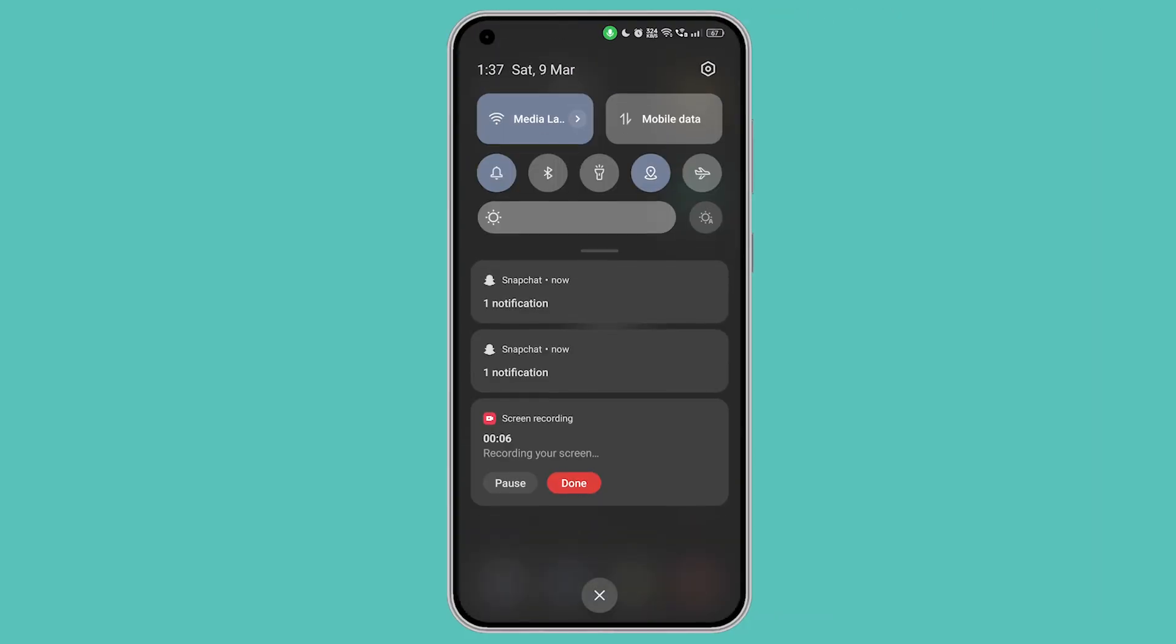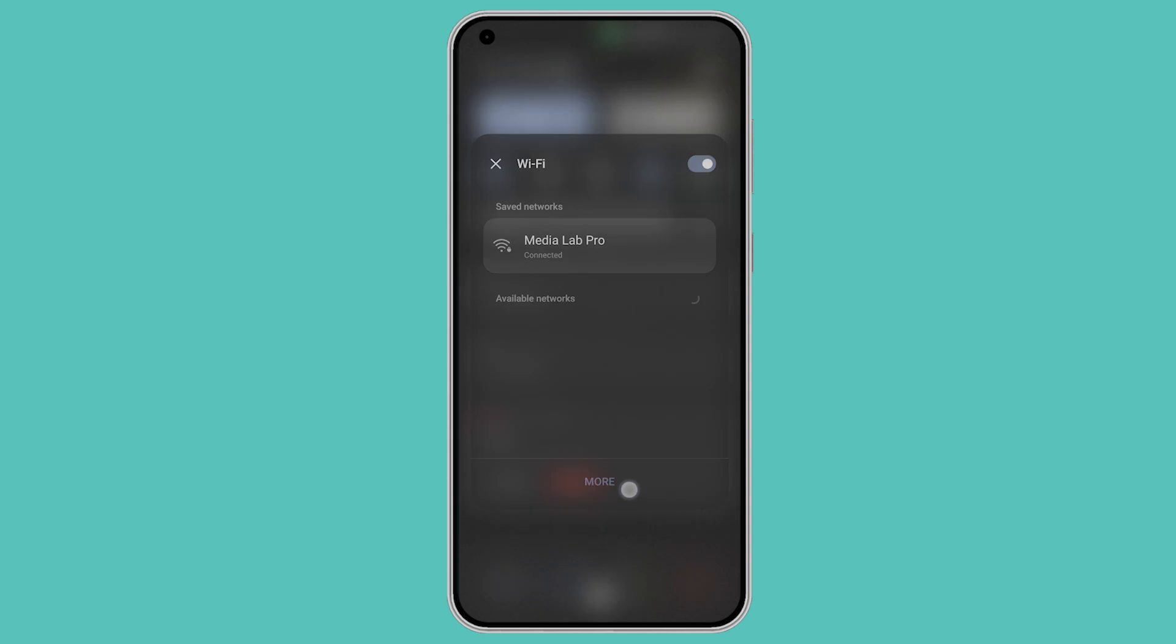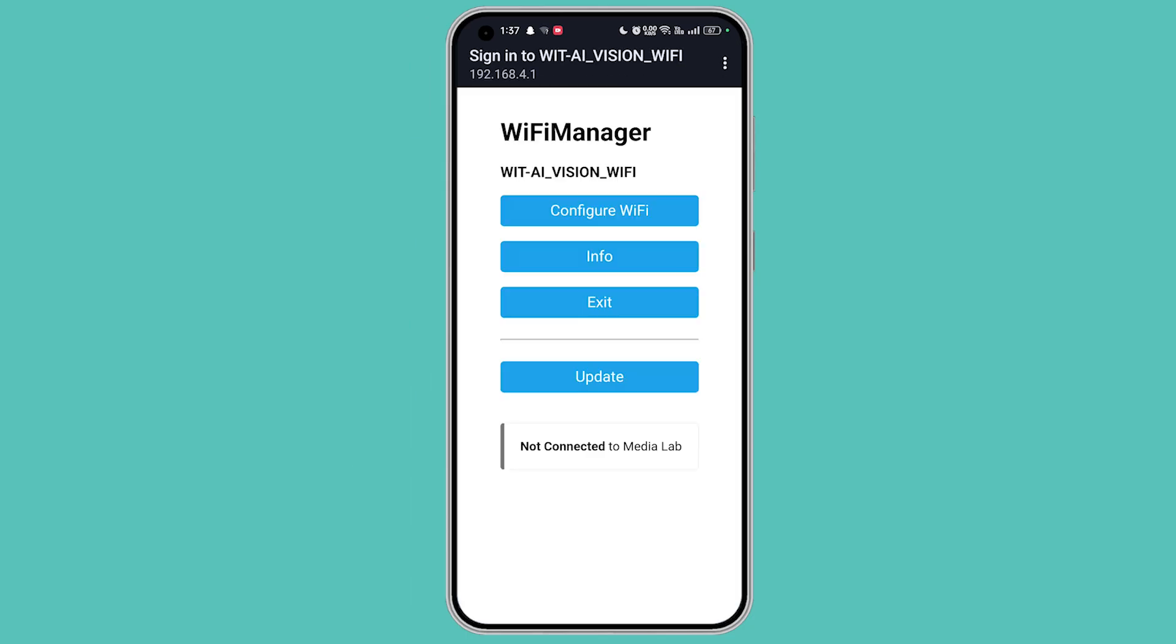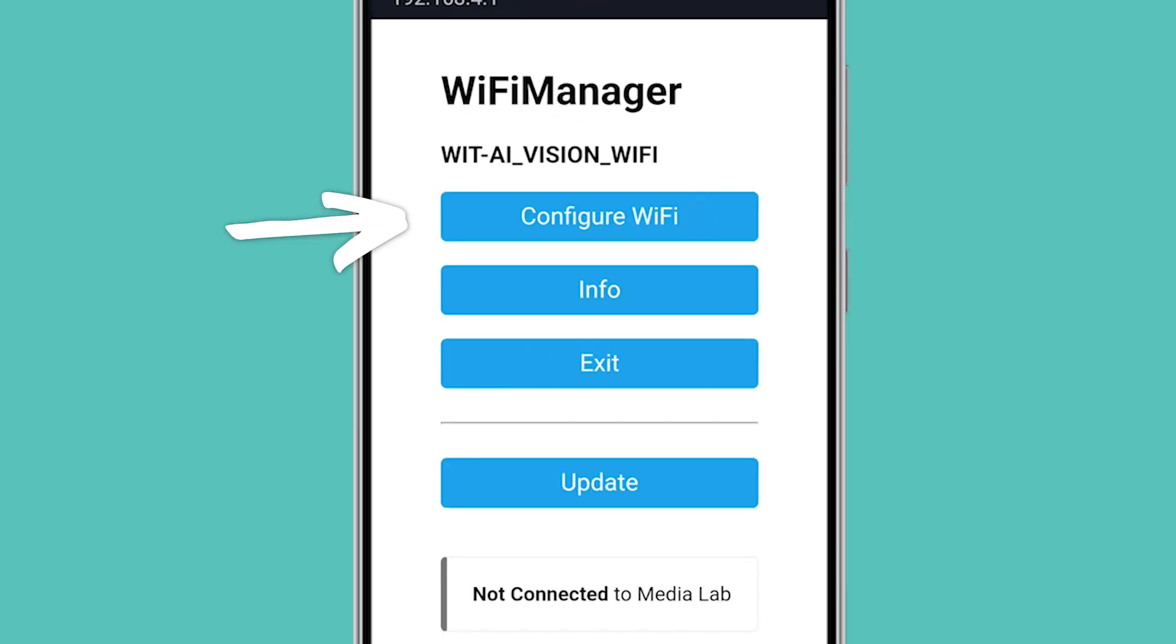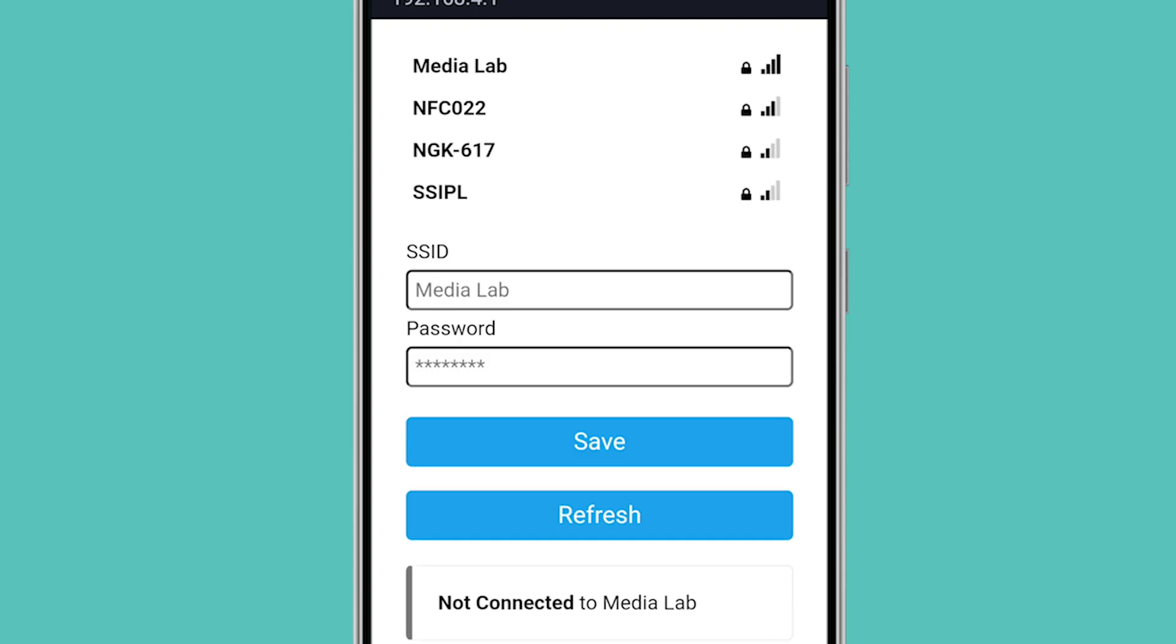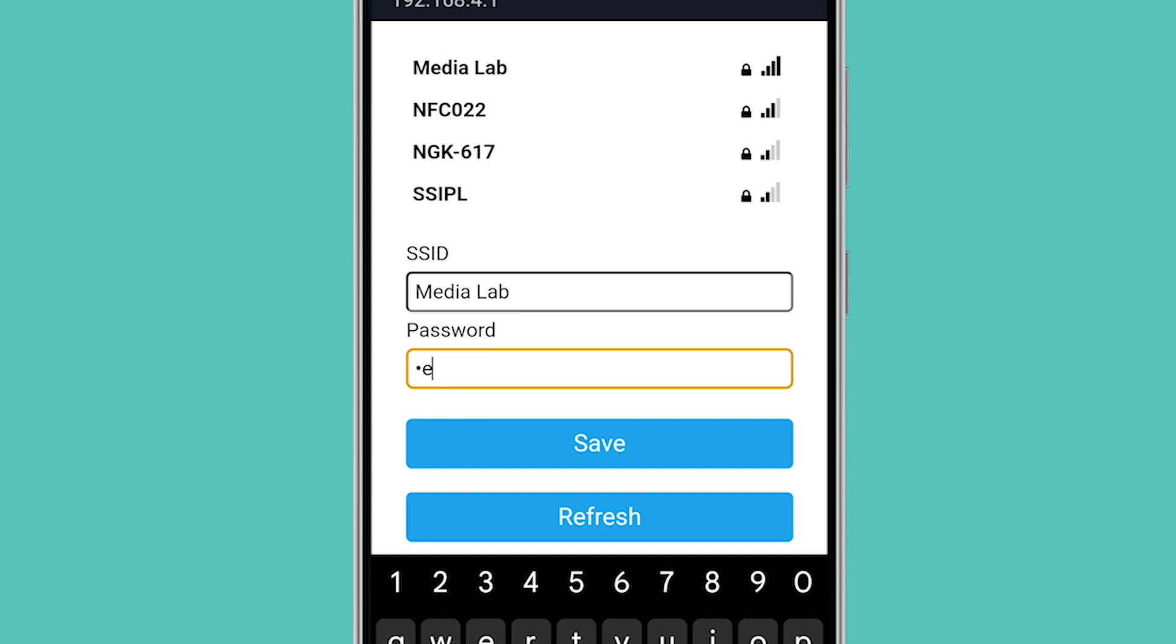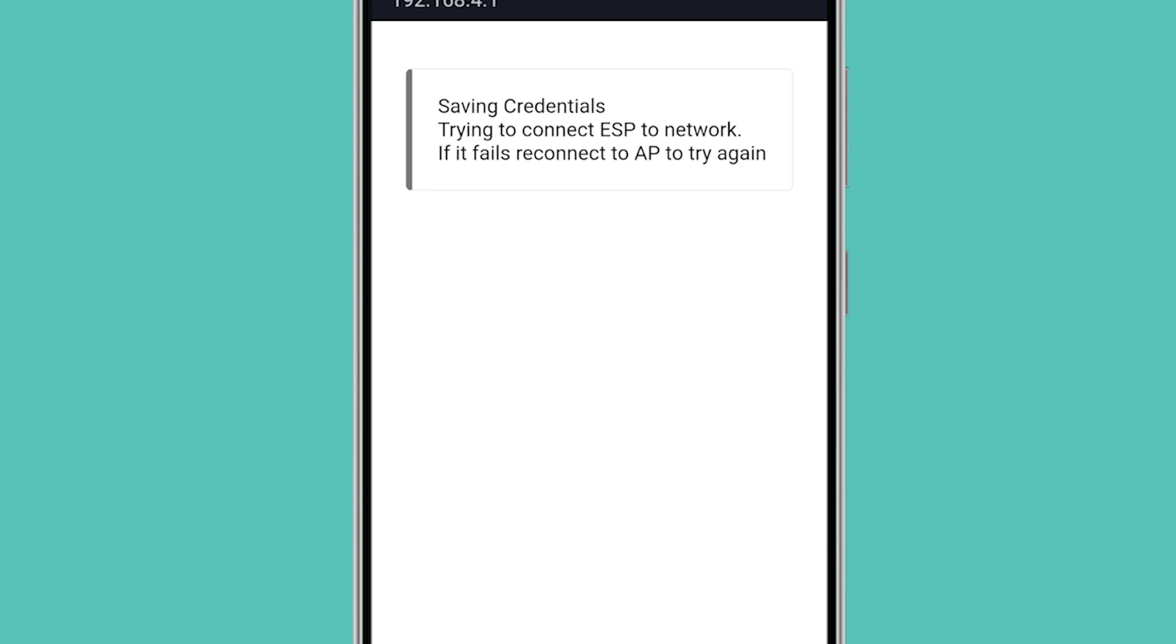Now go to your phone's Wi-Fi settings and connect the phone to the WITAI Vision Wi-Fi network. The Wi-Fi configuration page will automatically open up. Now go to configure Wi-Fi. The page will list down all available Wi-Fi networks. Select your Wi-Fi network and enter the password and click on save.